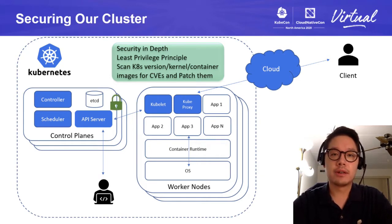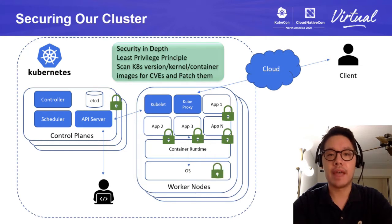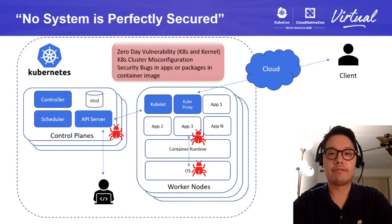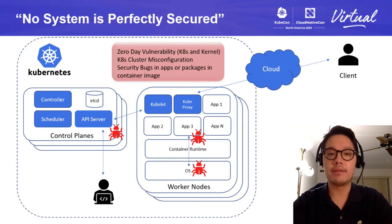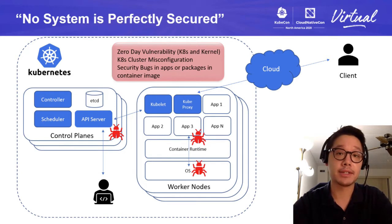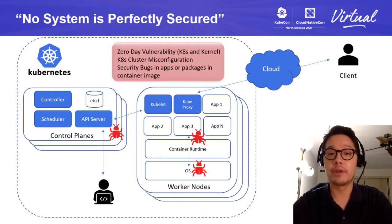We make sure to properly configure our control plane. We regularly scan our applications and kernel to make sure that there are no known vulnerabilities. We also make sure to configure our cloud provider to only accept expected traffic. Despite all our effort to make our system secure, there's no such thing as perfect security. One day there could be zero-day vulnerabilities in the Kubernetes version or kernel version we use, or our developer might misconfigure a Kubernetes cluster. There could also be a security bug in our application or the packages included in our containers.